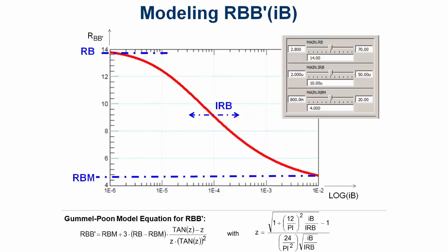For low base current values, RBB is modeled in Gummel-Poon as a constant and equal to the parameter RB. For high base current values, it is lower and again a constant, RBM where M stands for minimum. And the parameter IRB represents the base current of the transition region.